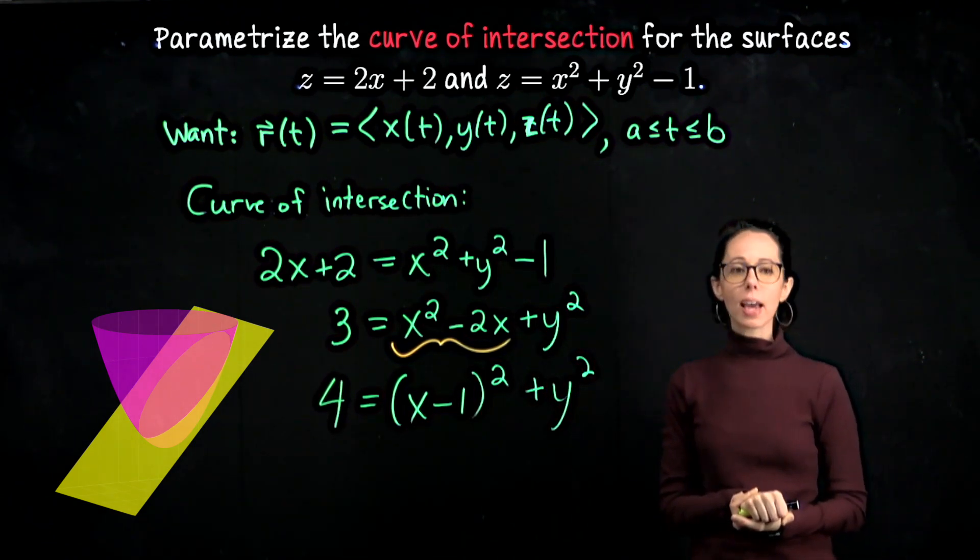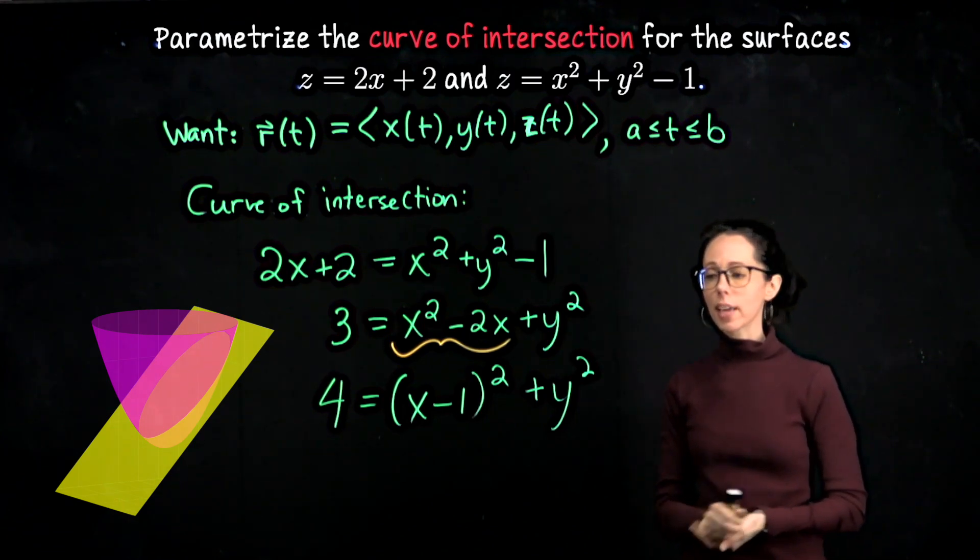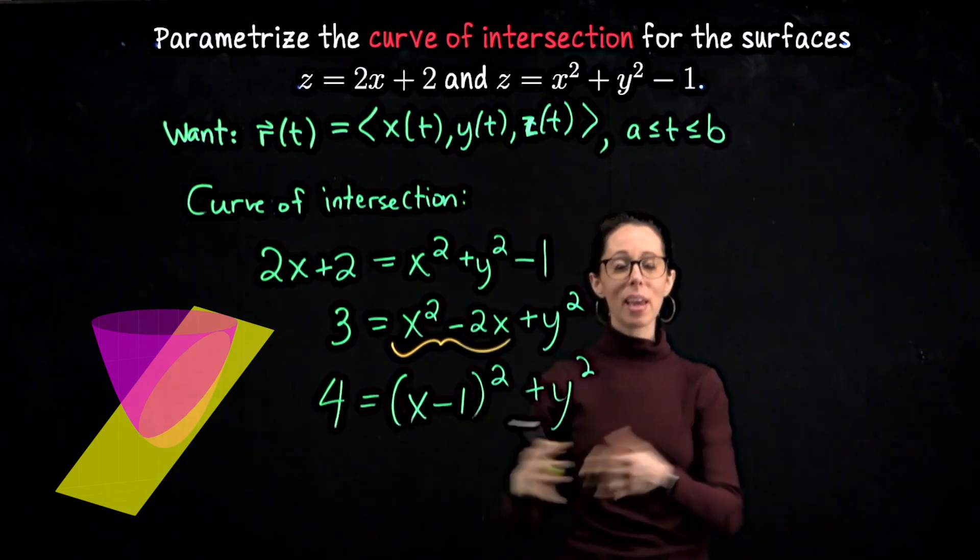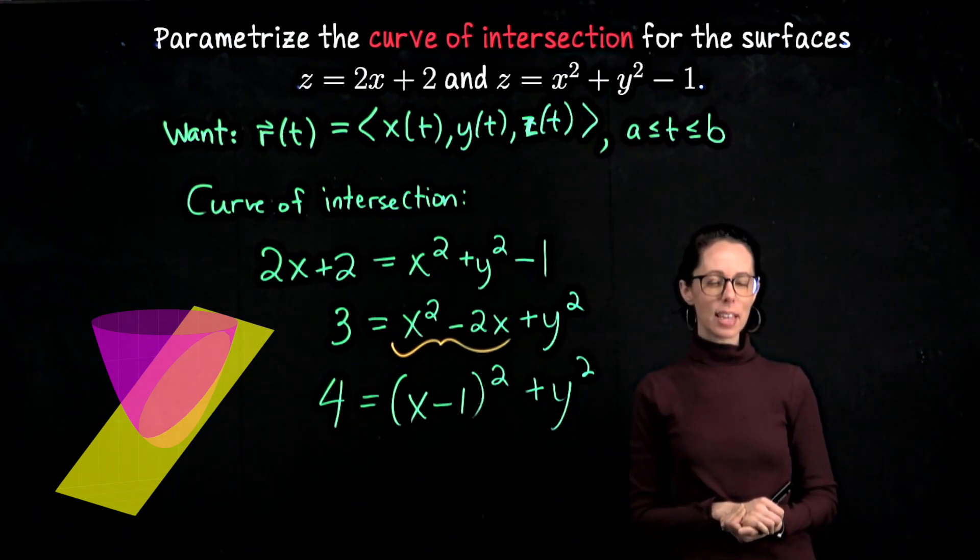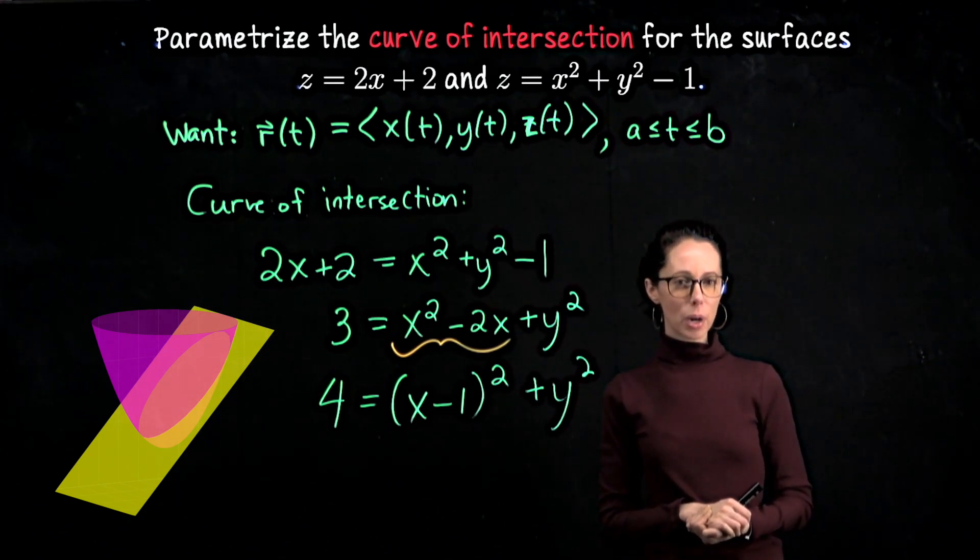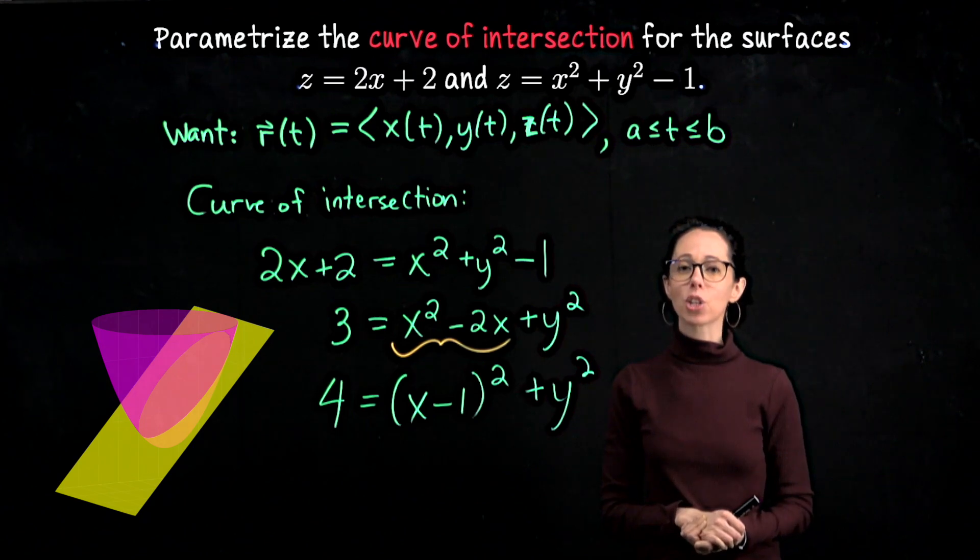This means that the x and y coordinates on this curve of intersection make this equation true. What is this? So take a moment to figure out what this is and see if you can go ahead and write down a nice parametric description for this and then I will come back and show you what I would like to do.